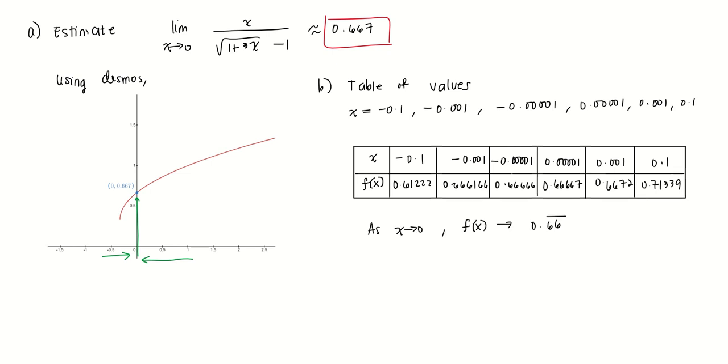And then lastly, we want to evaluate the limit manually. So for the limit as x goes to 0 of x over the square root of 1 plus 3x minus 1, we're going to multiply this by its conjugate. We have the limit as x approaches 0 of x over the square root of 1 plus 3x minus 1 times square root of 1 plus 3x plus 1 over the square root of 1 plus 3x plus 1.